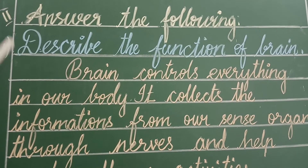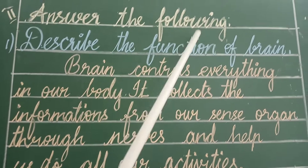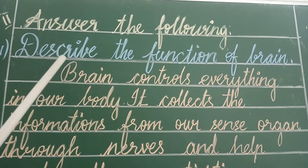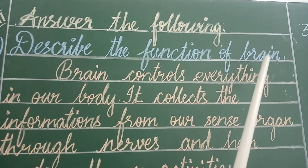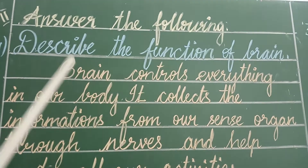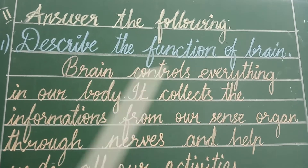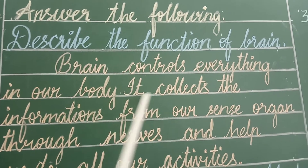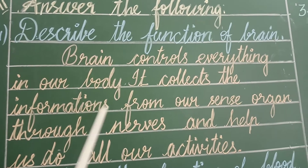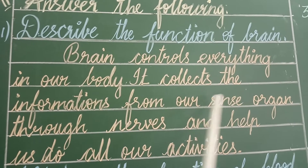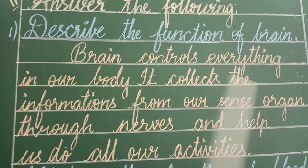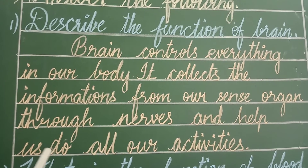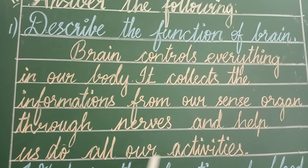Second, answer the following. First question: Describe the function of the brain. Brain controls everything in our body. It collects the information from our sense organs through nerves and helps us in all our activities.